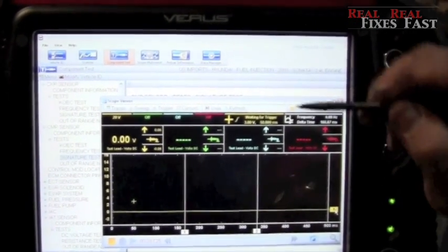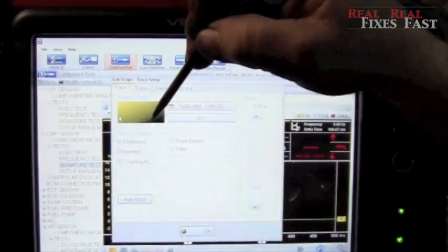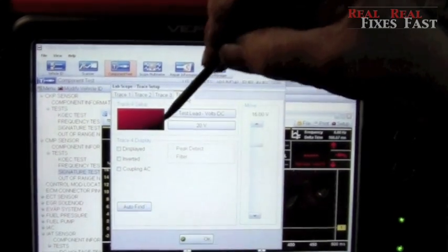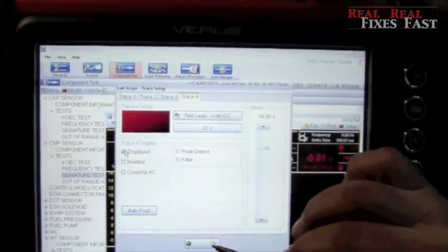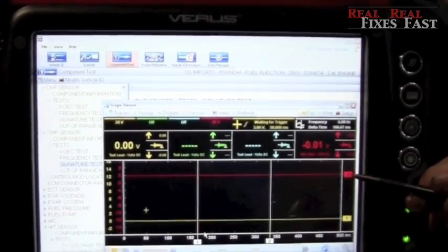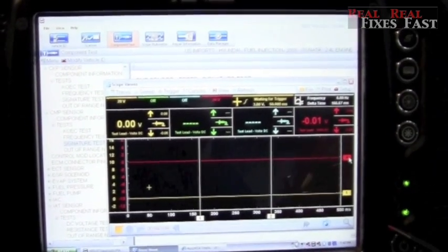Drag that up here a little bit. Now the red I need to turn on, so I'm going to go to traces, go to trace four, which is the red, and display that. Now I've got the red as well, so we can actually look at both signals.